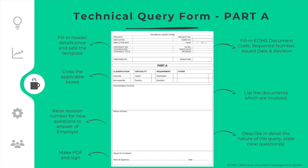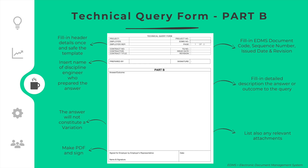The technical query form Part A shall be prepared by the contractor representative. The technical query form Part B shall be prepared by the relevant discipline engineer and shall be signed by the employer representative.